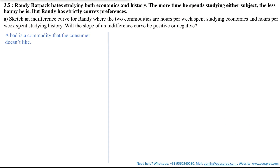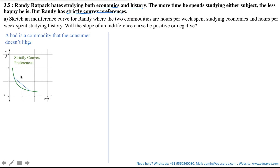After learning about the difference between convex and strictly convex preferences, let's come back to the question: sketch the indifference curve for Randy where the two commodities are hours per week spent studying economics and hours per week spent studying history. Will the slope of the indifference curve be positive or negative? To draw any indifference curve, you first need a basic idea of how the preferences look and behave. We have some information: first, for Randy both economics and history are bad commodities. Second, the preferences are strictly convex.